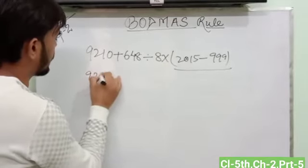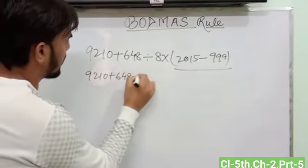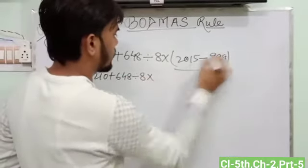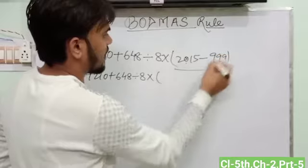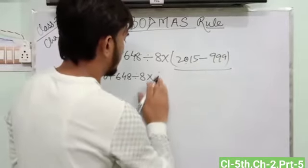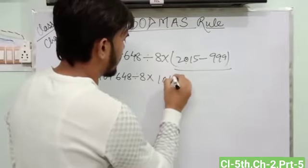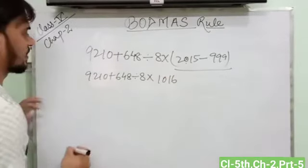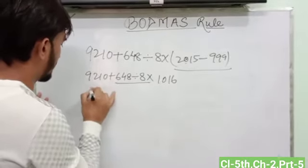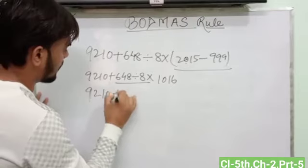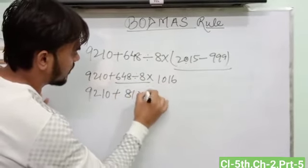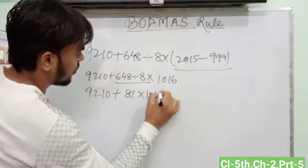So first solve the brackets. 2210 plus 648 divided 8 into, when we subtract this one, we got 1025. Then here, divide this one. 2210 plus 648 divided 8. We got 81 into 1016.